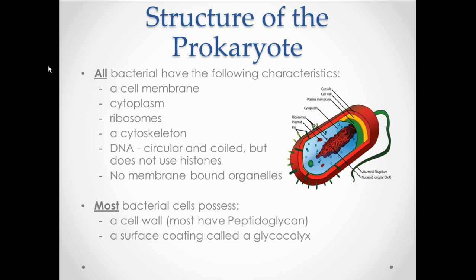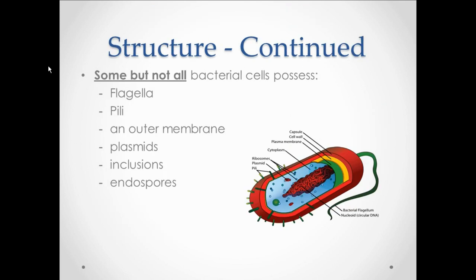Most bacteria will possess a cell wall and the majority of those that you will see will have a cell wall composed of peptidoglycan. Again, there is a separate video talking about the cell wall structure, giving specifics, and I will refer you to that video. Most bacteria will also have the sugar coat or the glycocalyx as either a capsule or as a slime layer. Some bacteria, but not all, will have the flagella or the pili. The gram-negative only will have the outer membrane. Some bacteria will have plasmids or inclusions, and the Clostridium and the Bacillus genus will have endospores.